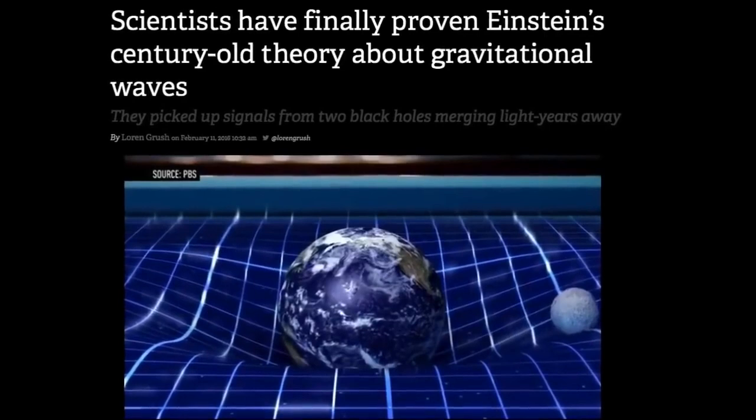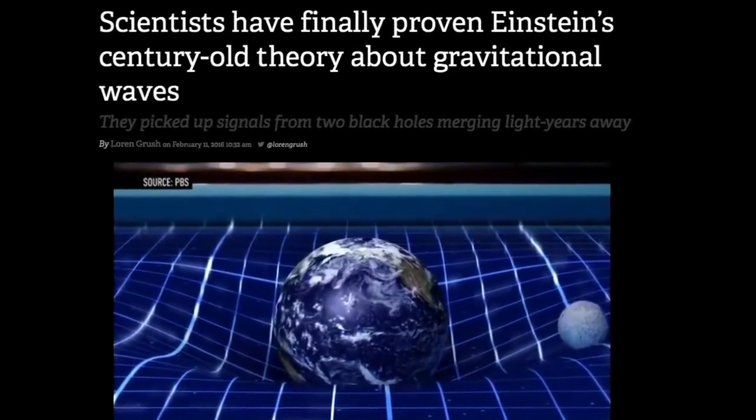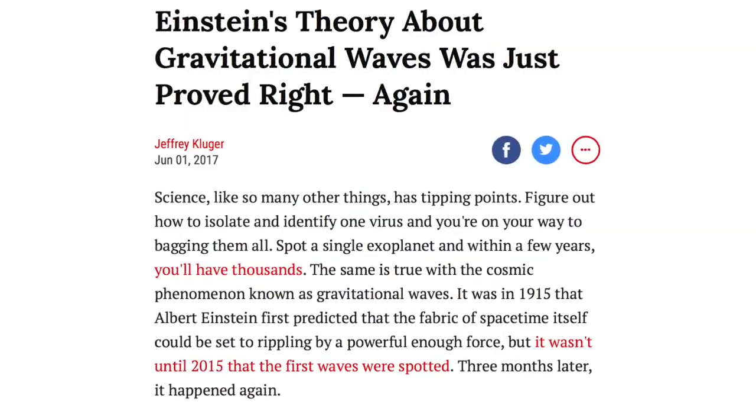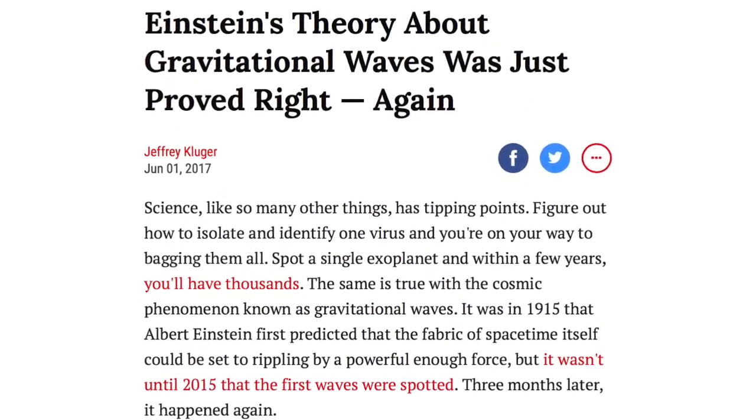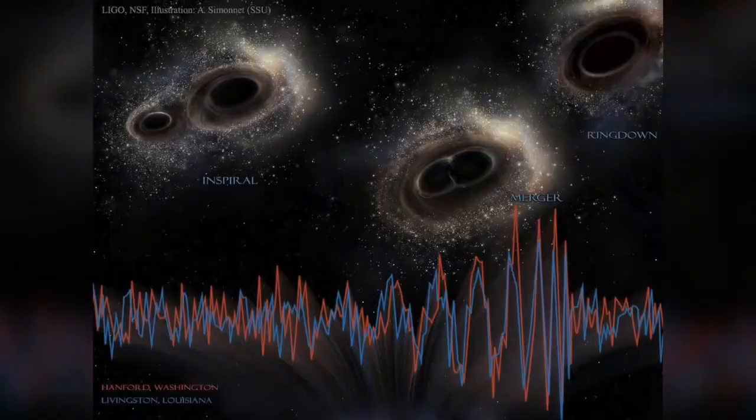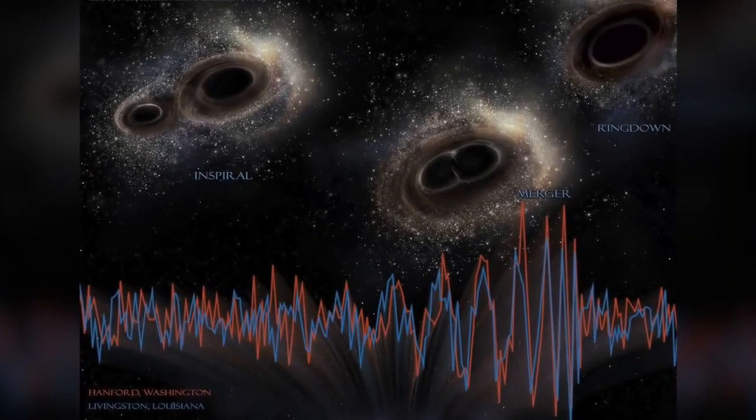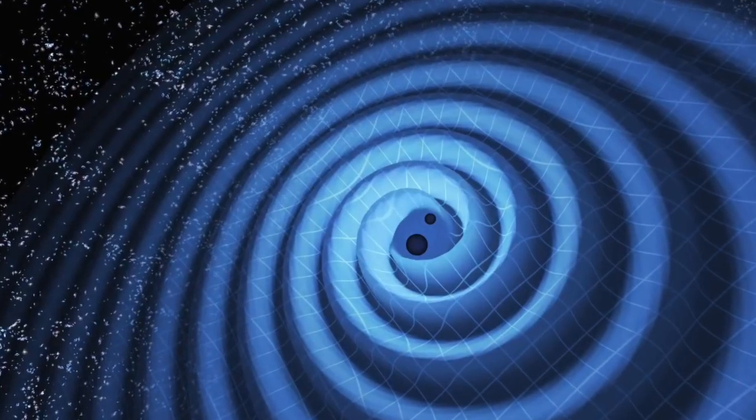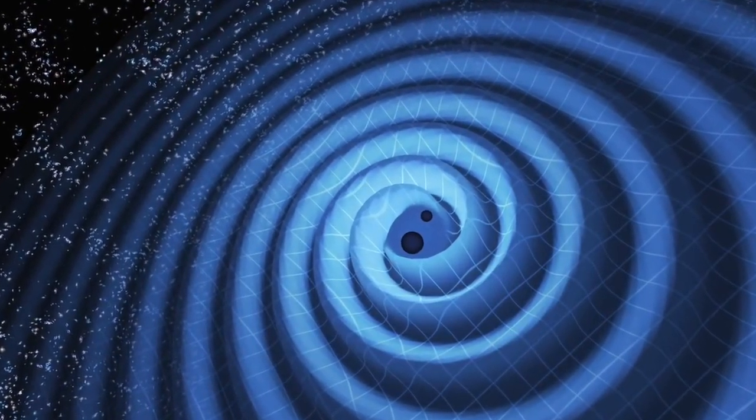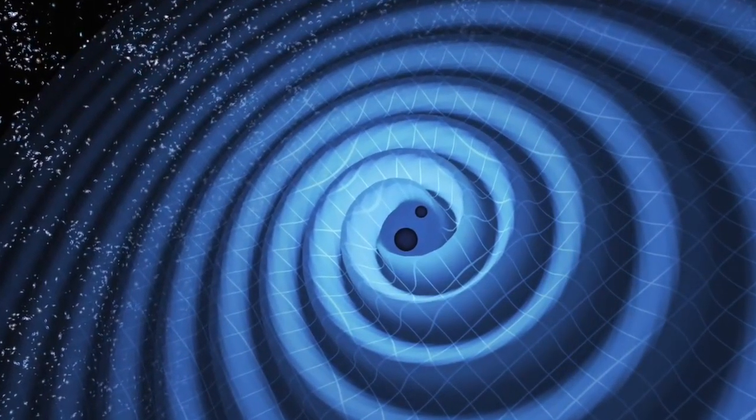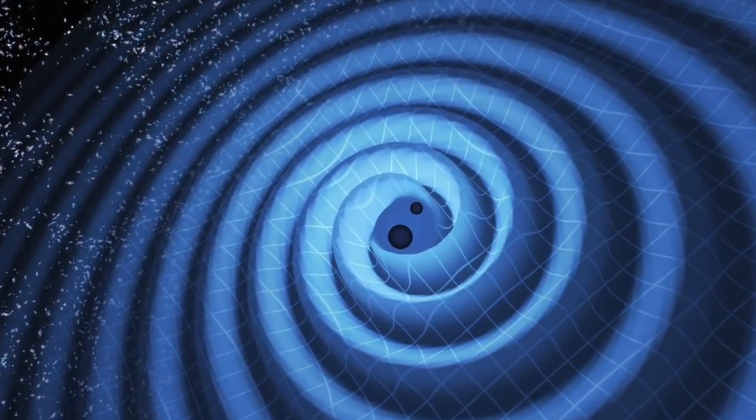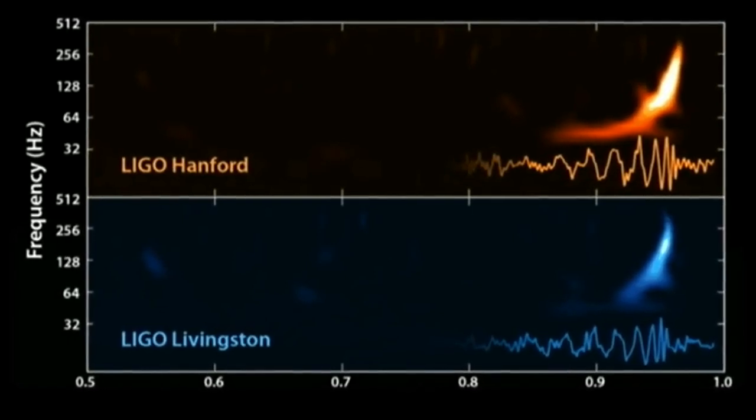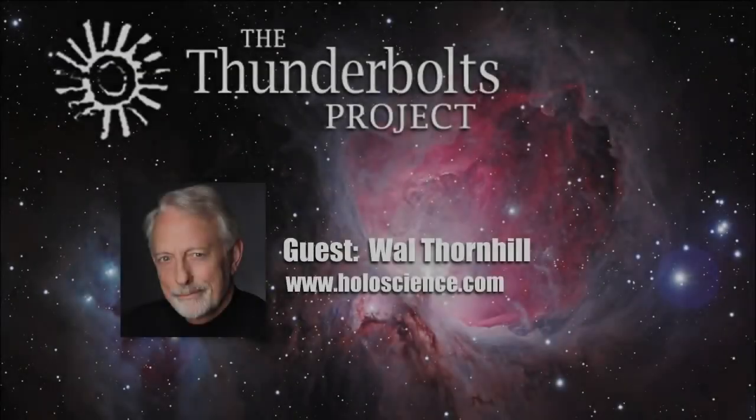However, institutional science and science media unite in consensus that the discovery is valid and marks an irrefutable confirmation of Einstein's theory of general relativity. Is the purported detection of gravitational waves actually valid? In part one of this two-part presentation, our chief science advisor, physicist Wal Thornhill, tackles the question and suggests why the signals cannot have anything to do with gravity.